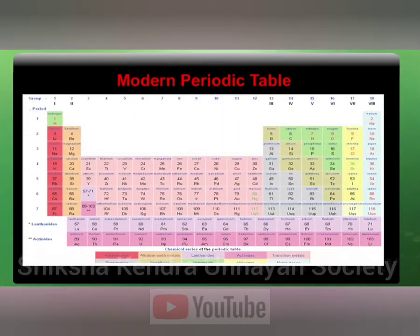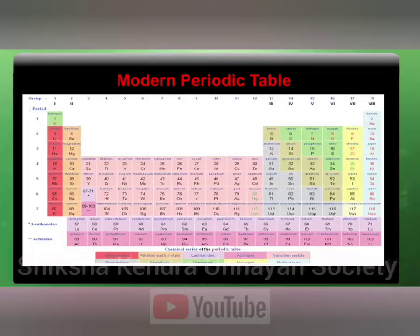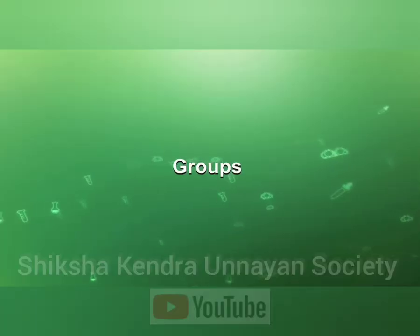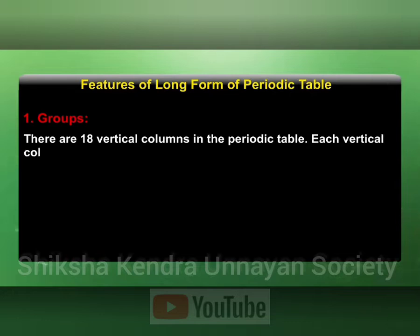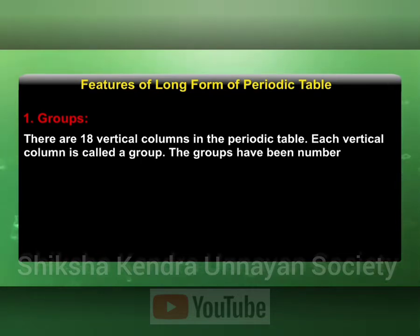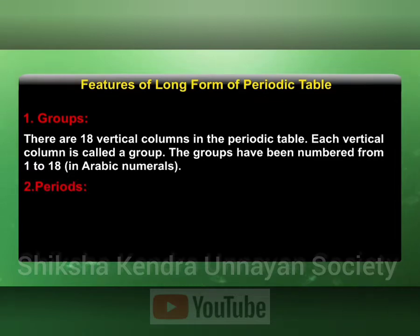This is the long form of periodic table, which indicates all the elements with a total of 7 periods and 18 groups. The groups: there are 18 vertical columns in the periodic table; each vertical column is called a group. The groups have been numbered from 1 to 18 in Arabic numerals.